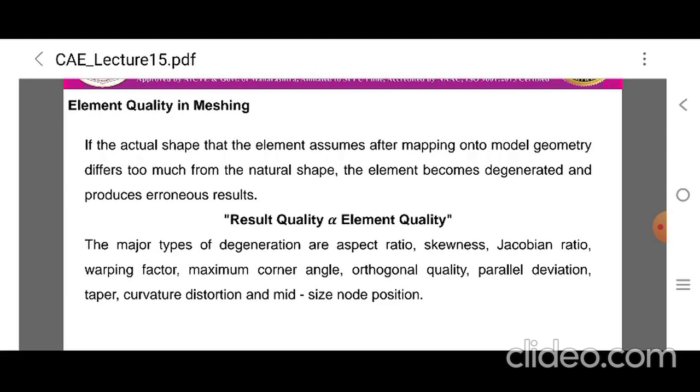The ideal shape of 2D elements, ideal shape of 2D elements or triangular elements is an equilateral triangle and quadrilateral is square. The ideal shape of 3D elements as a tetrahedral element is a regular or isosceles tetrahedral and hexahedron.